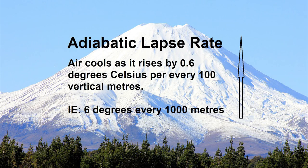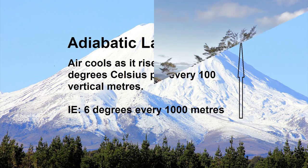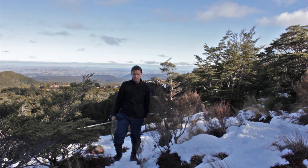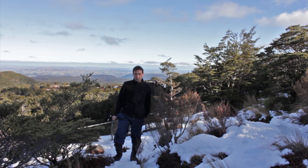We call the change of temperature as air rises the adiabatic lapse rate. Generally average daily temperatures fall about 0.6 degrees for each 100 vertical meters. Let's take a closer look at the interactions vegetation has with soil, relief and climate to produce these patterns.